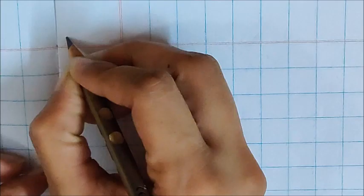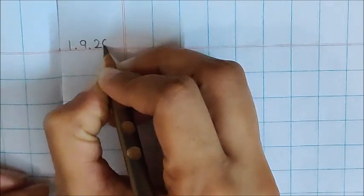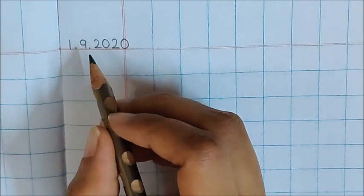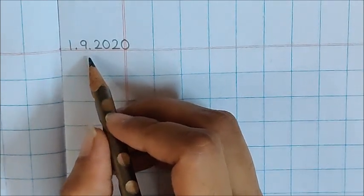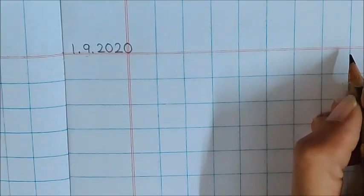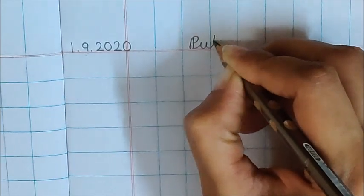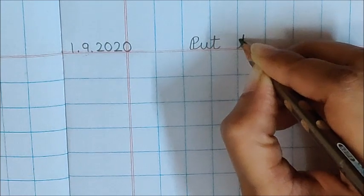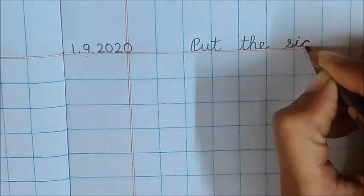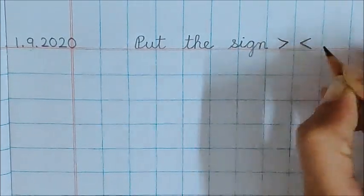So write down the date. Write 1 dot, 9 dot, 20, 20. We have 12 months in a year. And September is the 9th month. That is why we have written here 9. Now, on the red line, you can ask your Mama or Papa to write this for you. Put the sign and make these symbols.